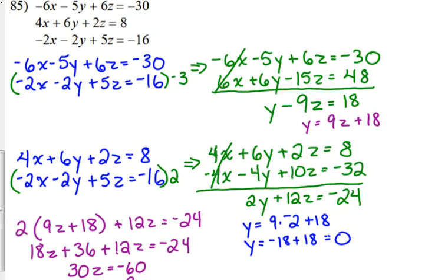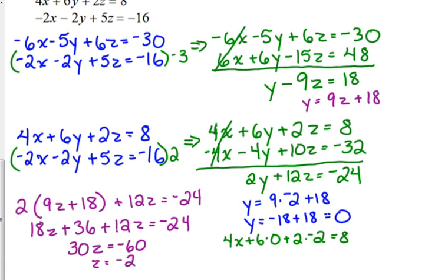And, then, let's see here. Which equation do I want to use to solve for x? I think I'm going to use the middle one, just because, again, I like to avoid the negatives. So, 4 times x, which is what we're looking for, plus 6 times y, which is 0, plus 2 times z, which is negative 2. That's equal to 8. So, that goes away. 4x minus 4 is equal to 8. Add the 4, 4x is equal to 12, x is equal to 3.